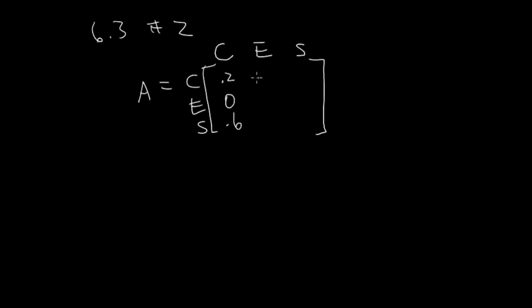One unit of electricity required 0.6 unit of cement, 0.1 unit of electricity, and didn't mention anything about steel, so zero. Steel required 0.2 unit of cement, 0.4 unit of electricity, and 0.3 unit of steel.